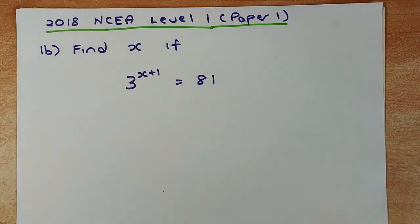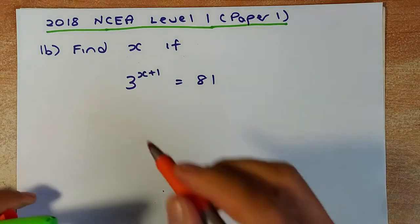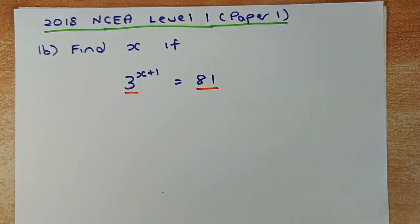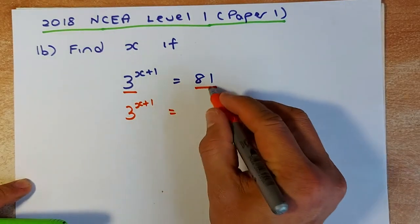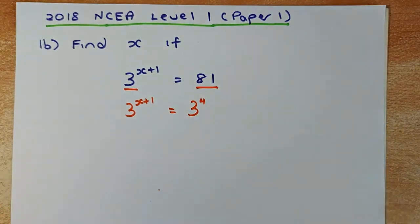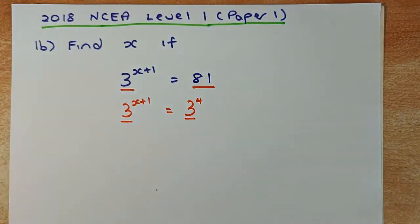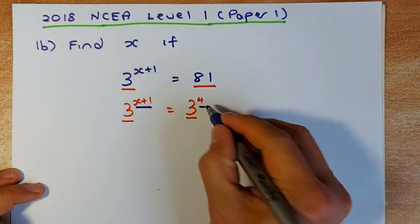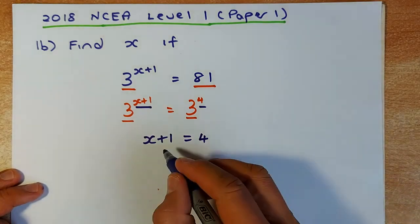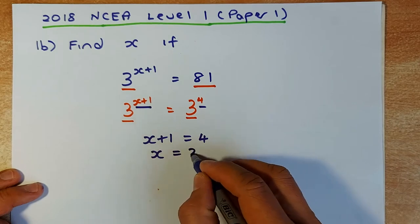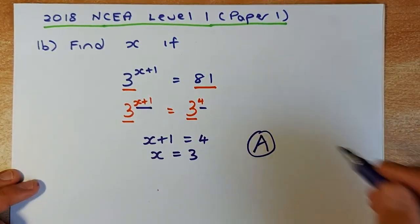The first question is from the 2018 NCEA Level 1 paper 1, and you need to solve for x. You have to make the base the same. So 3 to the power of x plus 1 equals 81 — and 81 is 3 to the power of 4, since 3 × 3 × 3 × 3 = 81. Now the base is the same, so x plus 1 equals 4. Solving algebraically, subtract 1 from both sides: x equals 3. That gives you an Achieve in NCEA Level 1.